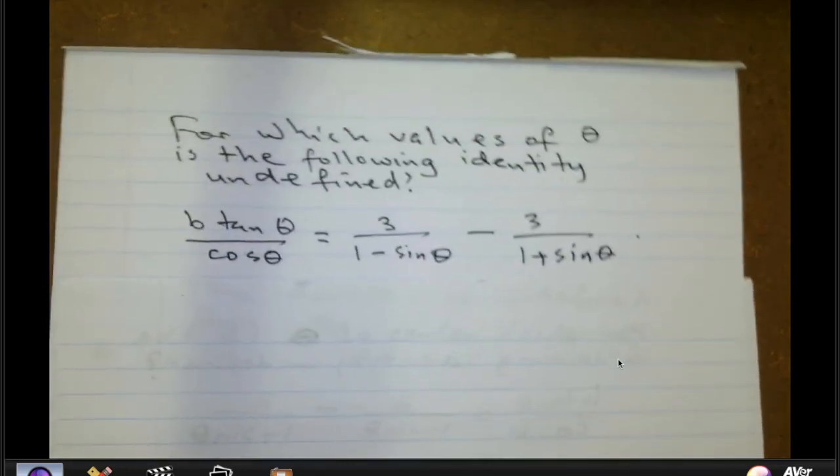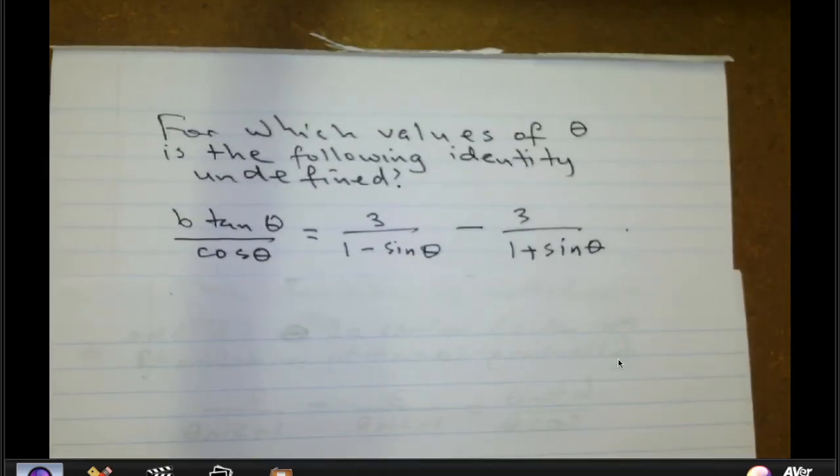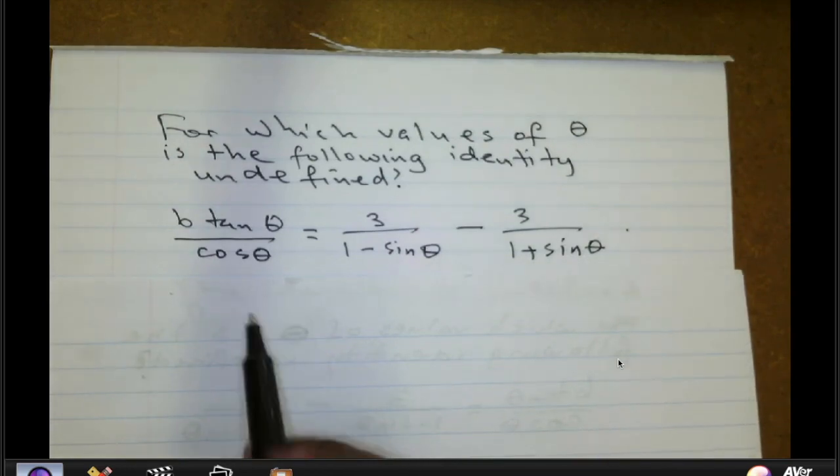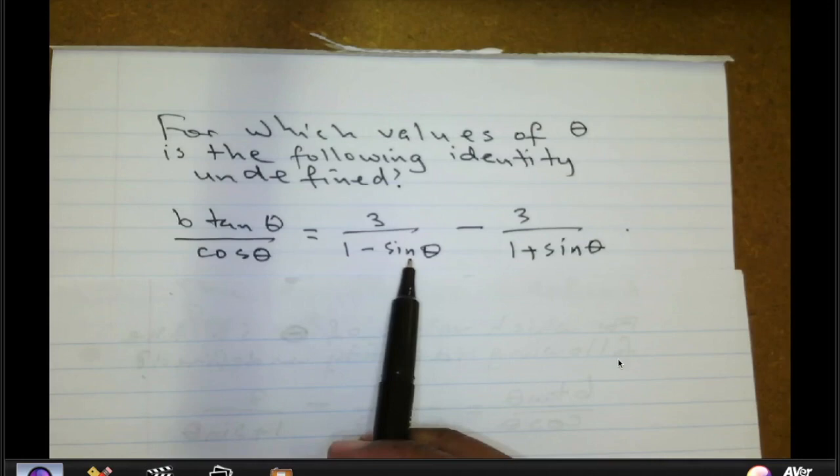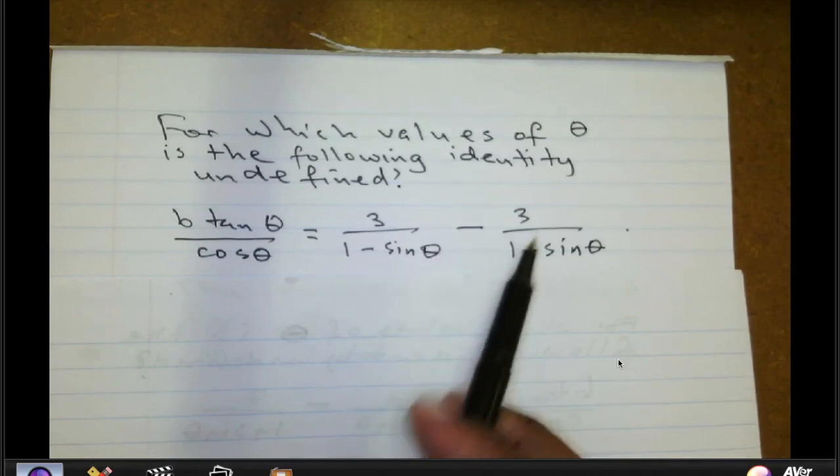So the question reads, for which values of theta is the identity below undefined? That is 6 tan theta divided by cosine of theta, which is equal to 3 divided by 1 minus sine of theta, subtract 3 divided by 1 plus sine of theta.